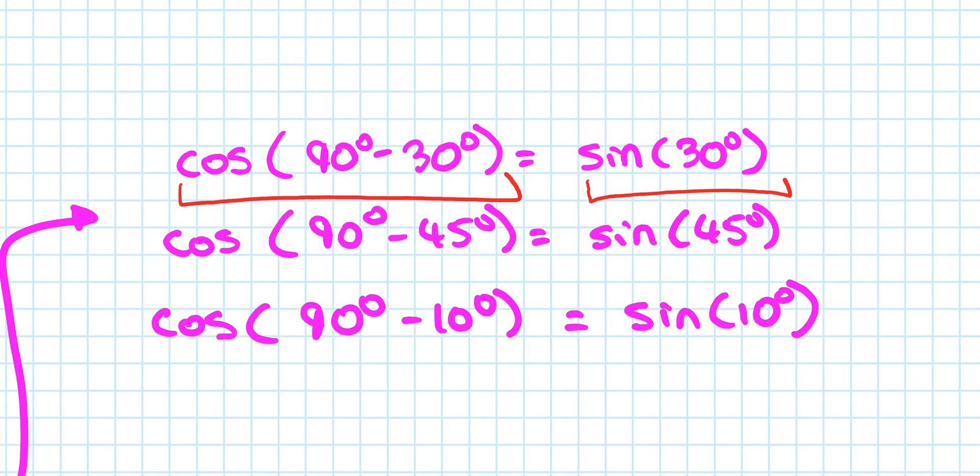So you can actually check this on your calculator, that if you type in cos of 90 minus 30, that will be the same as sin 30, or cos of 90 minus 45, that's the same as sin 45, cos of 90 minus 10, that's the same as sin 10.